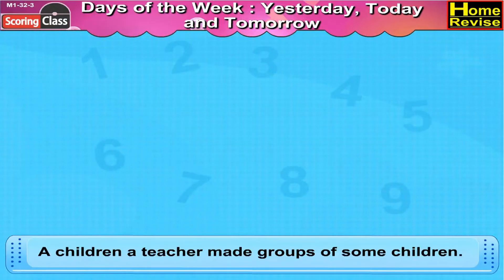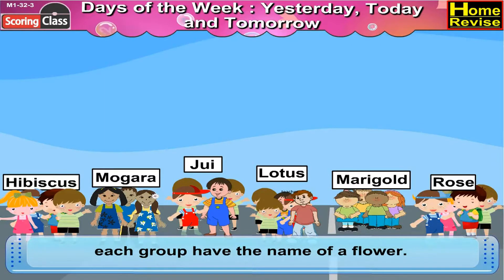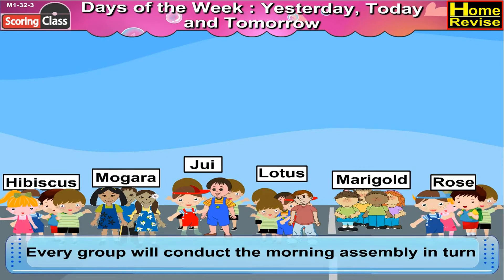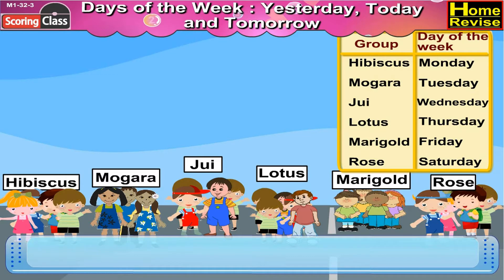A teacher had made groups of some children. Each group has the name of a flower. Every group will conduct the morning assembly in turn. Here is a table with the group name and the day of the week when they will conduct the assembly.